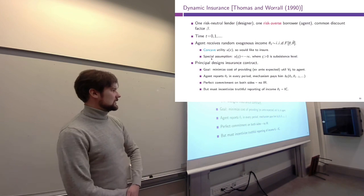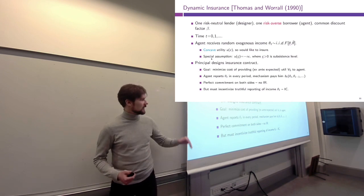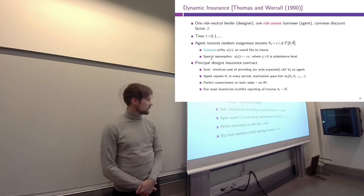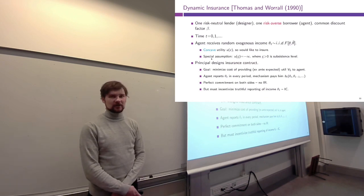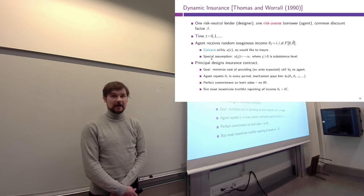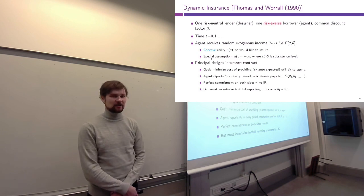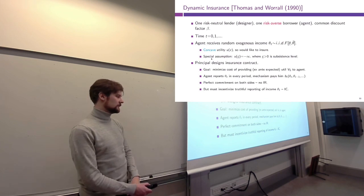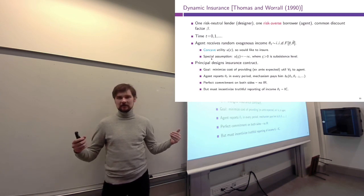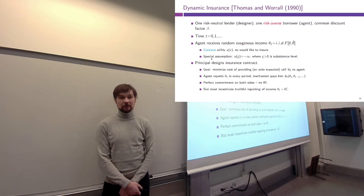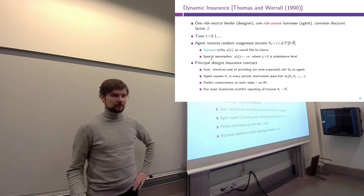The principal designs an insurance contract with the goal of providing some fixed utility V₀ to the agent. One interpretation is that V₀ is the average lifetime expected utility in the absence of insurance — the government can give them that utility while extracting some tax revenue. Alternatively, V₀ is a target utility level for all citizens, aiming to build an equal society where everyone receives utility as close to V₀ as possible.